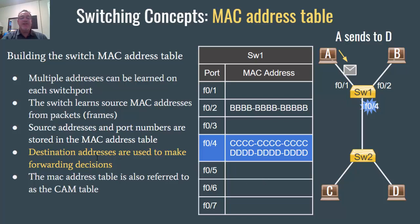Now, what about destination addresses? Destination MAC addresses are used to make forwarding decisions. The switch looks at the destination MAC address, checks its table, and if it knows where to forward the frame, it switches it out of that switch port. In this case, A wants to send to D, so the destination MAC address is D's. The switch compares it to its MAC address table and sees that to get to host D, it should switch the frame out of port FastEthernet 4.